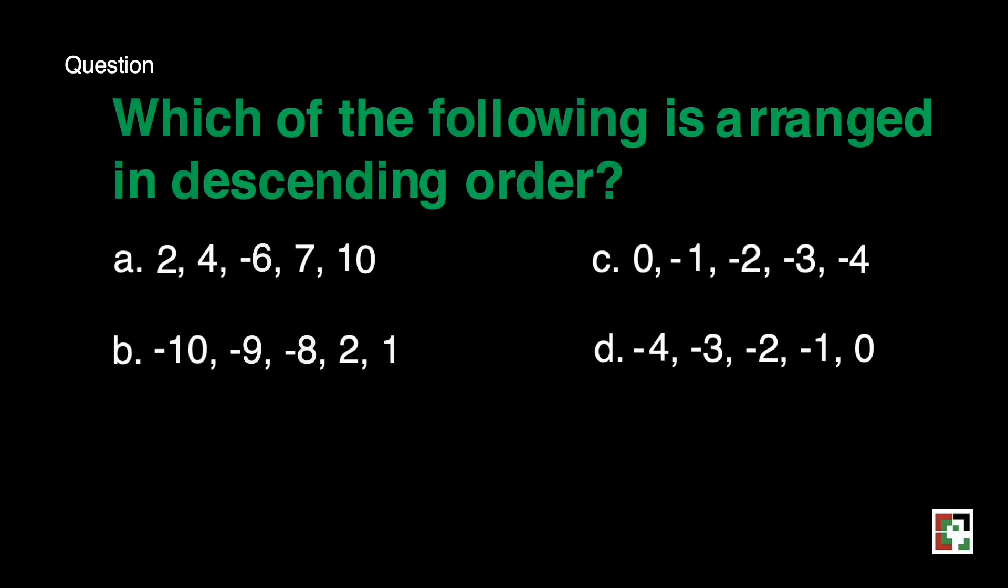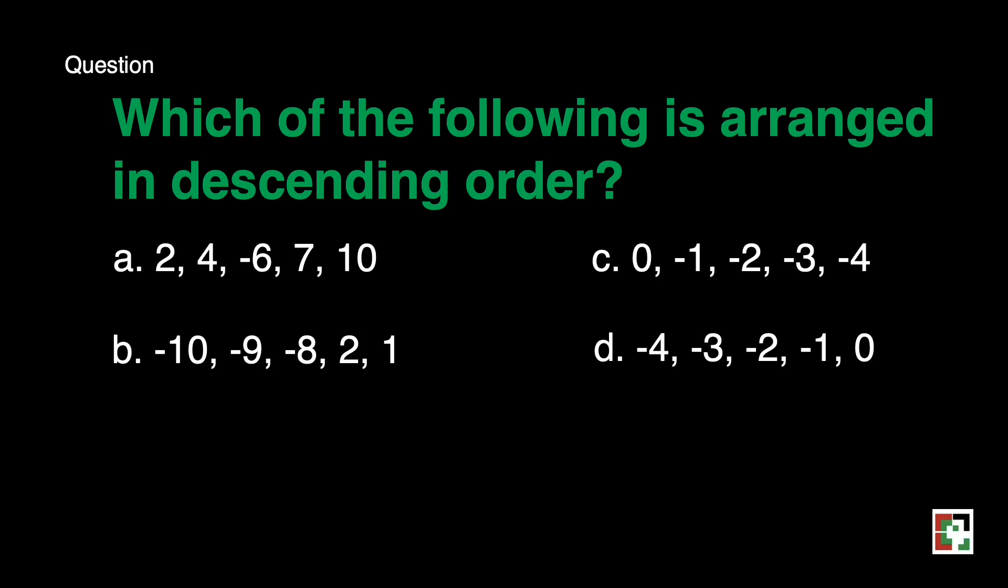Next question. Which of the following is arranged in descending order? Is it A? Is it B? C? Or D? Our answer is letter C. When we say descending, that means we have to arrange from the biggest to the smallest value. So we have here in letter C, we started from 0, then negative 1, negative 2, negative 3, and negative 4.